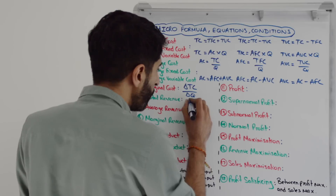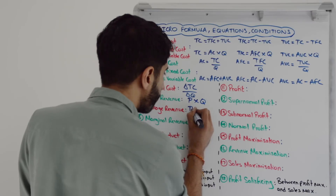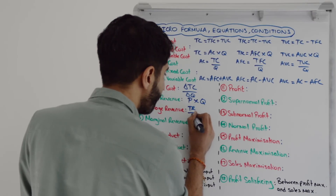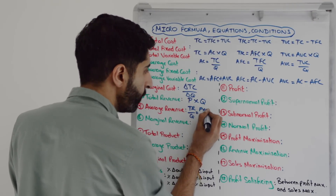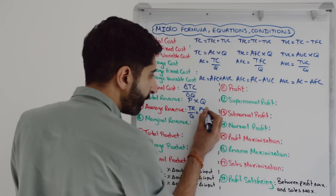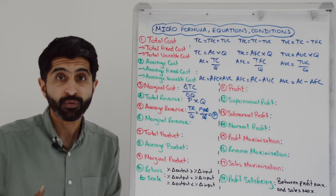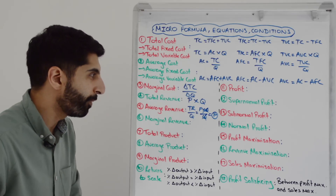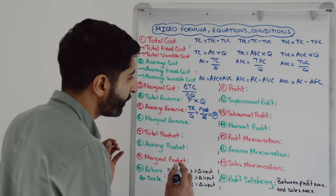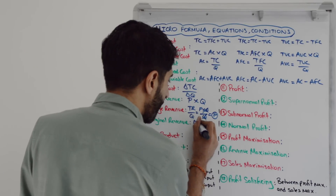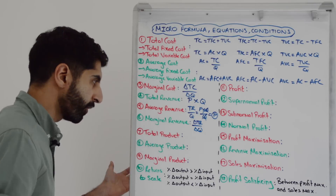Move to revenue. Total revenue is P times Q. Average revenue is total revenue divided by Q. But if you expand that out — TR is P times Q, cancel out the like terms — you're left with P. So a nice trick: average revenue is just price, simple as that. Marginal revenue is just the average equation with changes in it. So now the change in total revenue divided by the change in quantity gives you marginal revenue.